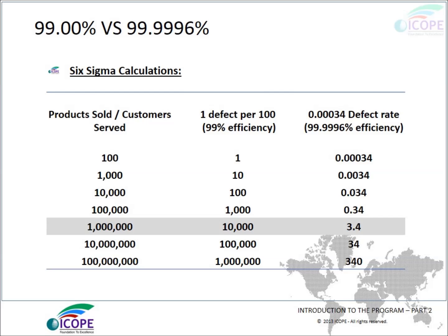Why should you consider Six Sigma over the conventional model? Most people consider 99% the best, but by growing demand and customer needs, it is no longer acceptable. To achieve the highest level of perfection in both service and manufacturing, it is required to please customers at the highest level. If there are 100 products sold, at 99% efficiency there would be one defect.